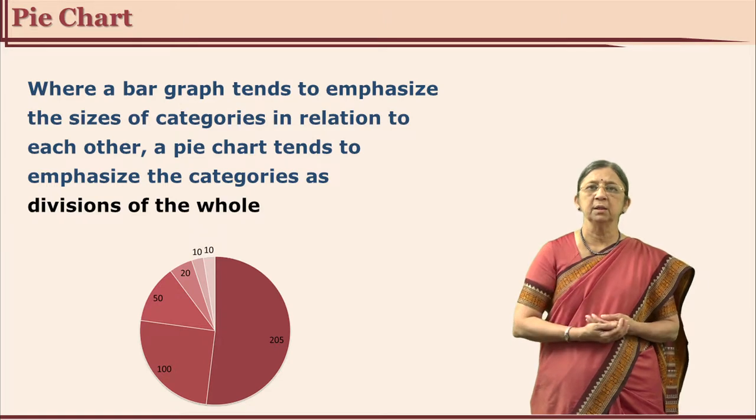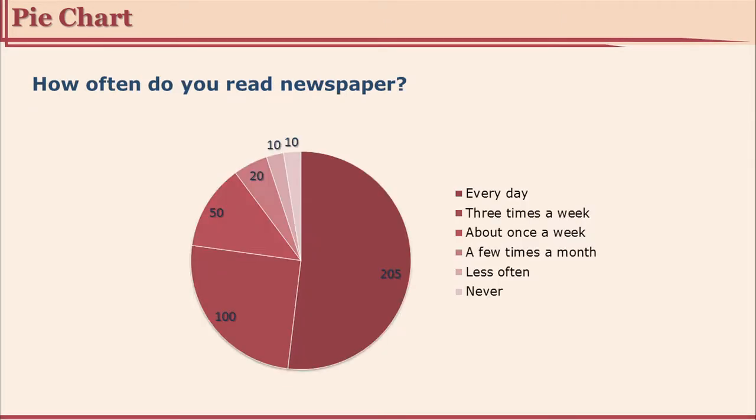Let us see an example of pie graph. We asked respondents how often do you read a newspaper, and we had 6 categories. In this pie chart the 6 categories are shown and their weightage is shown in terms of percentages. Even if you do not show it in terms of percentage, it is taken as percentage — you can show the actual frequency there.